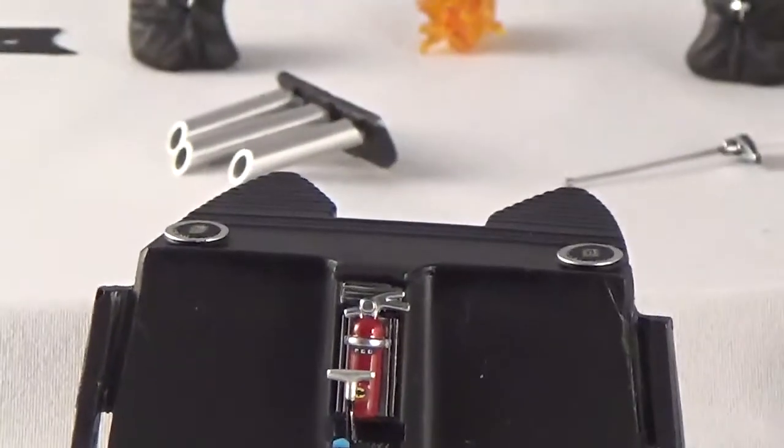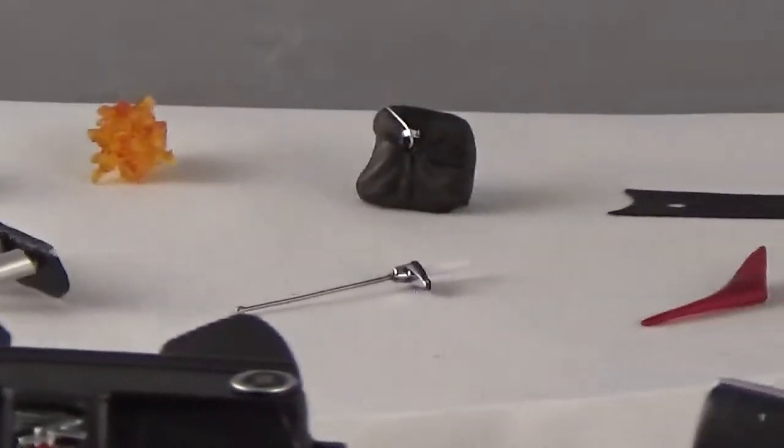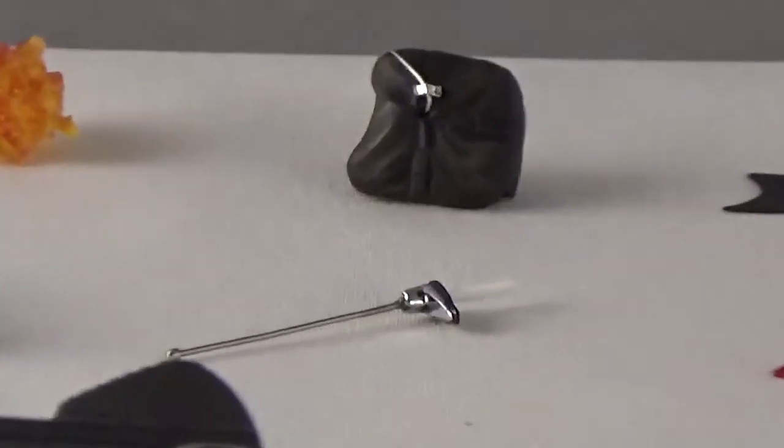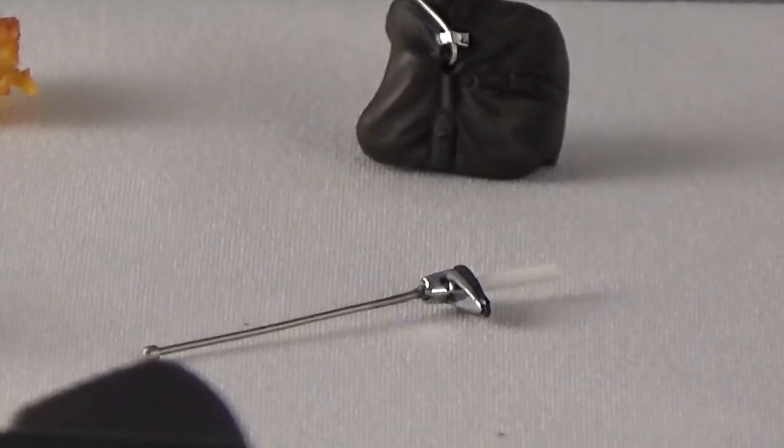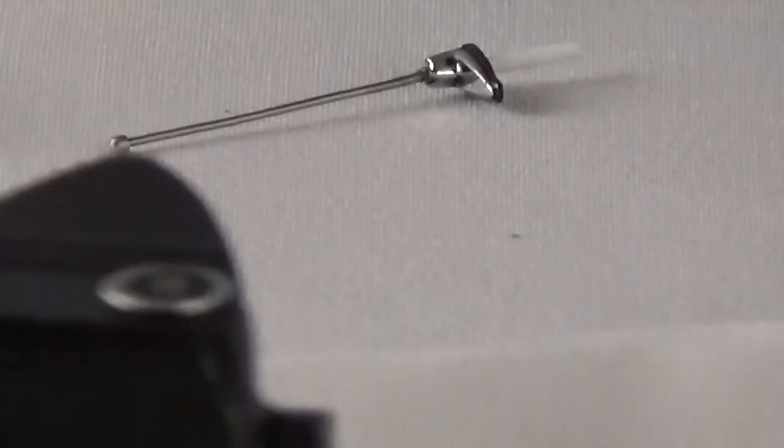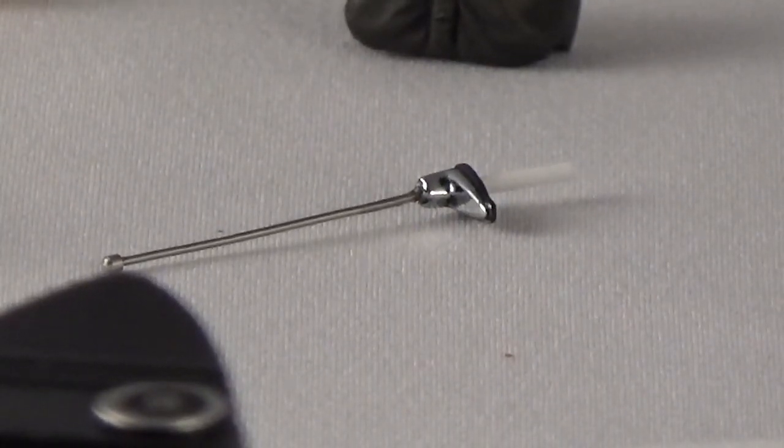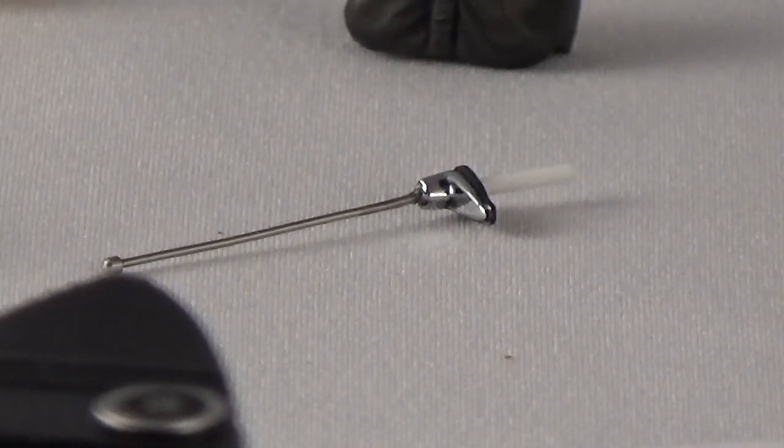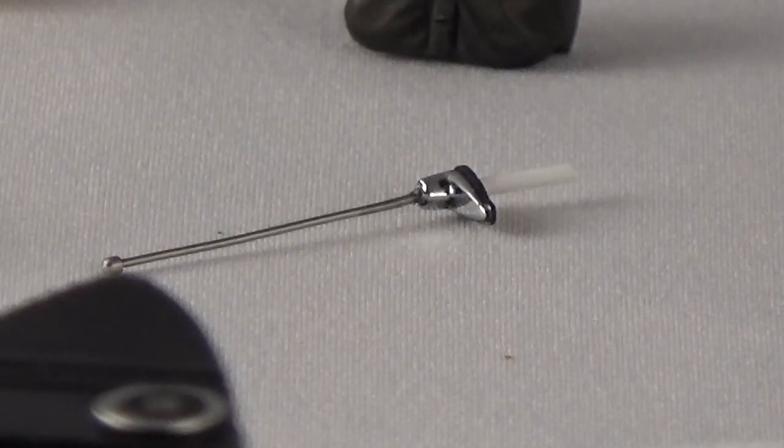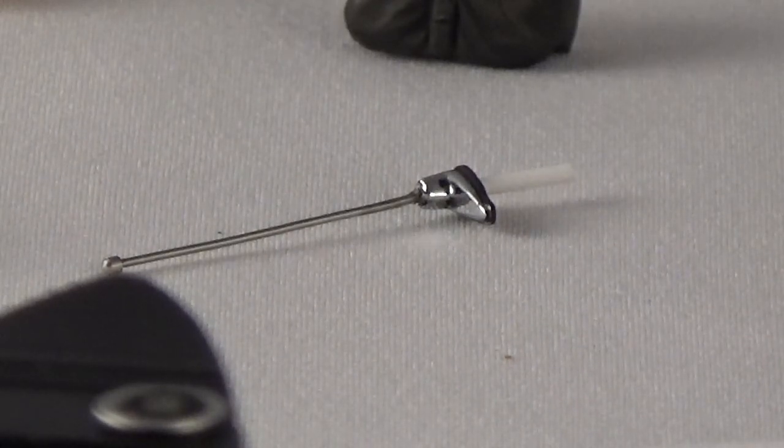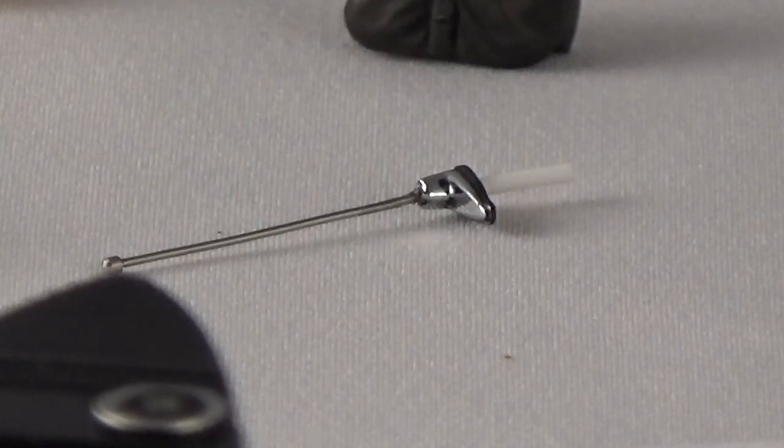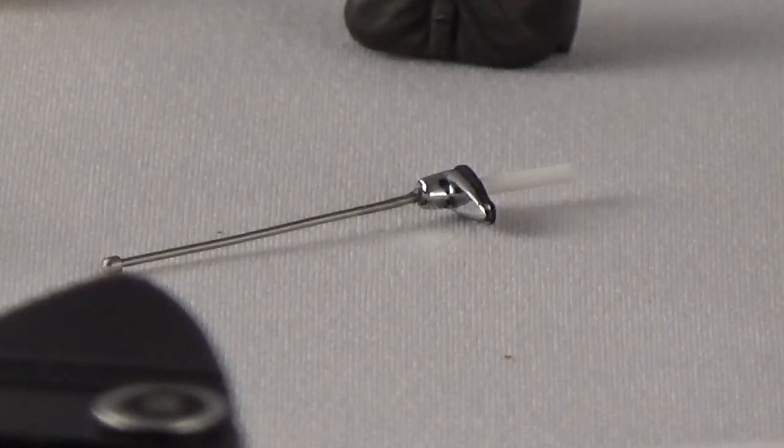As we walk our way back to the Batmobile, I want to go to the antenna here, the rear antenna. This was a really tough piece to find. I tried to modify what came with the kit, and it just didn't look right. I went back to the old 1966 Batmobile website and kept looking at the antenna. I said, where on earth did this antenna come from?